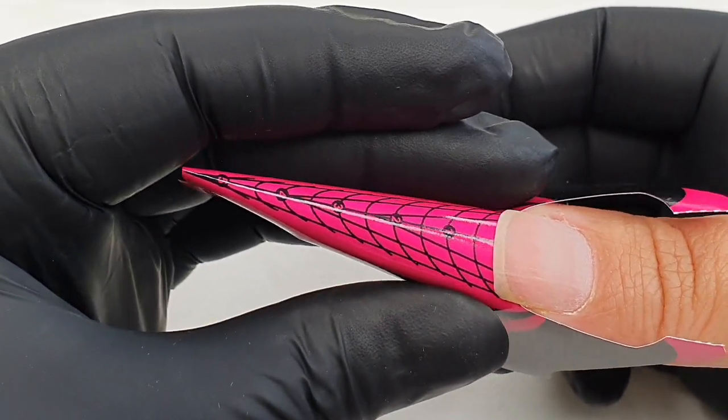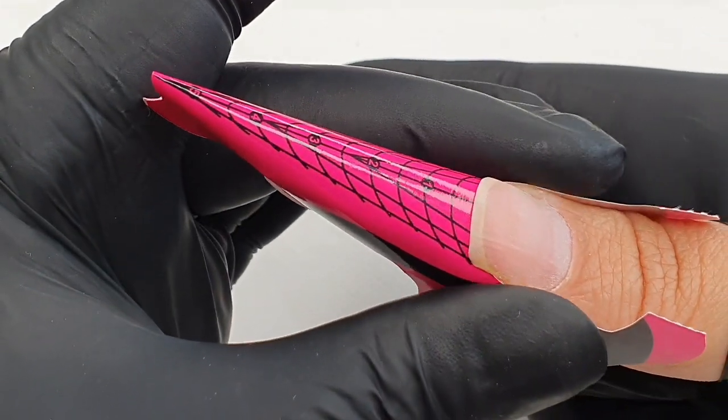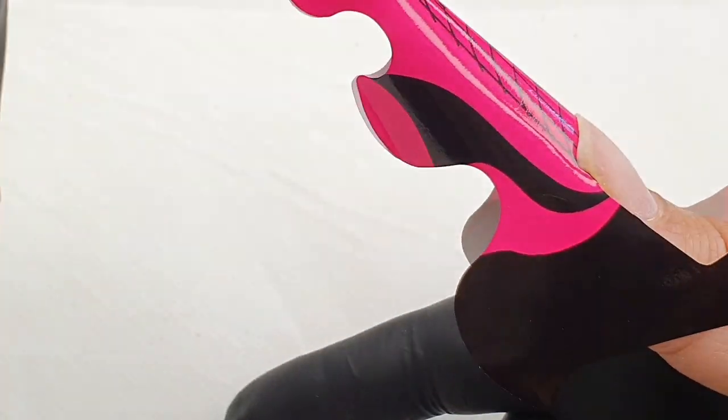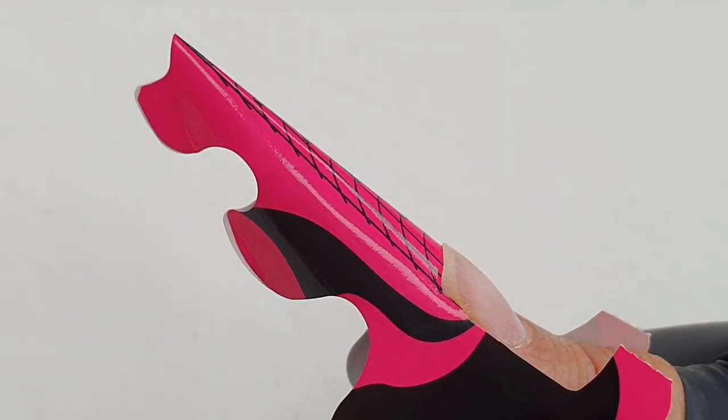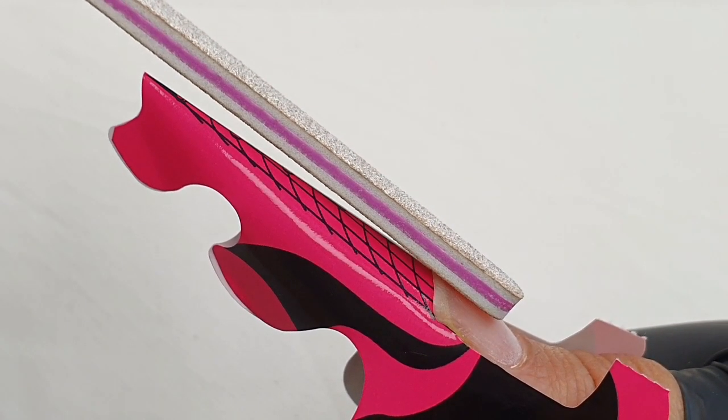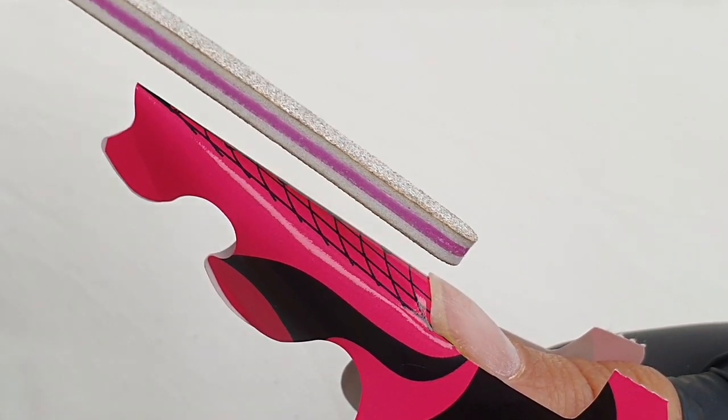We're going to apply our form under our nail and we want to get a snug fit. This means I don't want to have a gap between the natural nail and the form. I'm also going to check the position of my form. I don't want it going up or down, it's running straight with my natural nail.